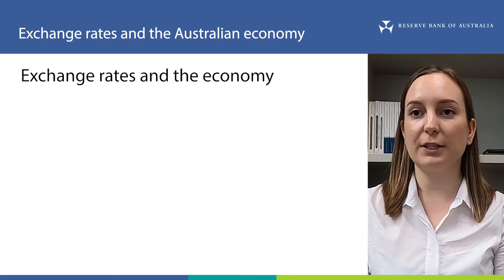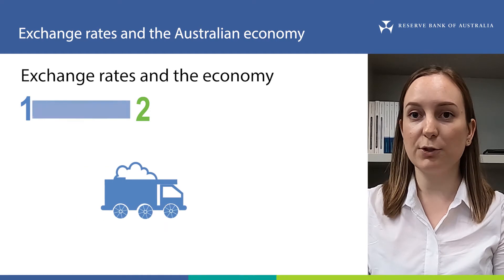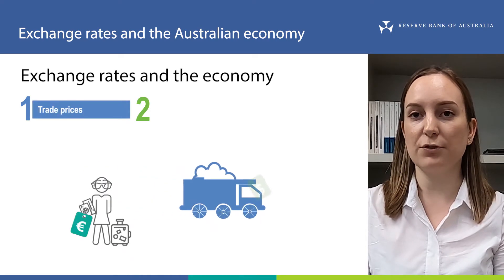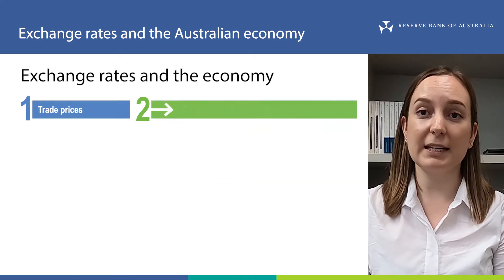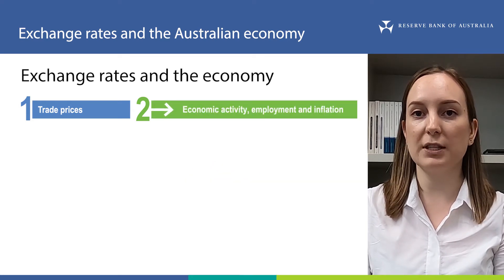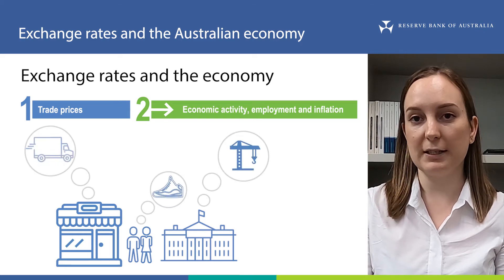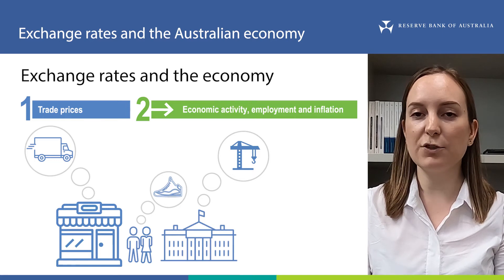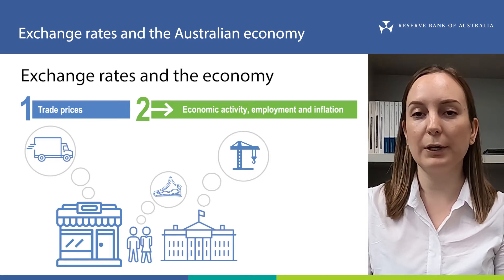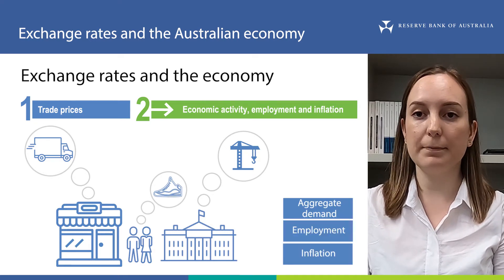We can break down the effect of the exchange rate on the economy into two stages. The first stage is the direct effect of changes in the exchange rate on the prices of goods and services that we trade with the rest of the world. The second stage captures how changes in the prices of those goods and services affect the behaviour of households, businesses and governments when making decisions about spending and investing. Across the whole Australian economy, the exchange rate affects key economic indicators such as aggregate demand, employment and inflation.